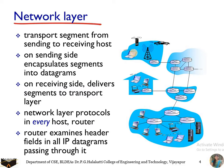At routers or any intermediate devices, they examine the header field of the IP datagrams passing through them. If you want to send a packet to a destination in another network, the datagram passes from the source to a router. The router finds the destination IP address at the network layer and forwards the packet to the next router. Again, that router checks the IP address at the network layer and decides the next router to forward the packet to. Every time it moves up to the network layer to check the IP address and forward the packet to the next intermediate device.